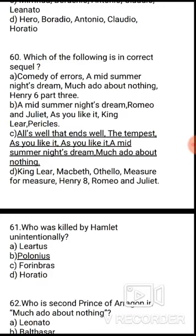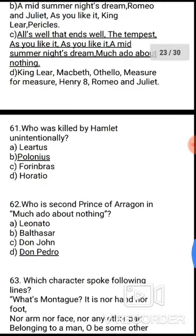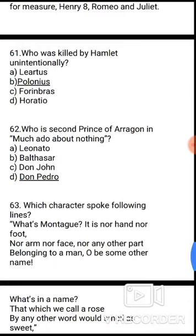Question 61: Who was killed by Hamlet unintentionally? The correct answer is option B — Polonius was killed by Hamlet unintentionally. Question 62: Who is the Prince of Aragon in Much Ado About Nothing? The correct answer is option D, Don Pedro.